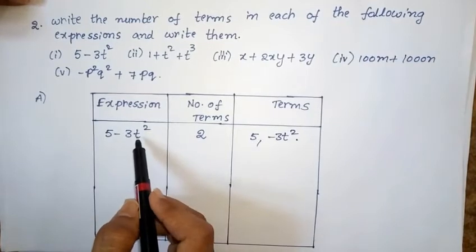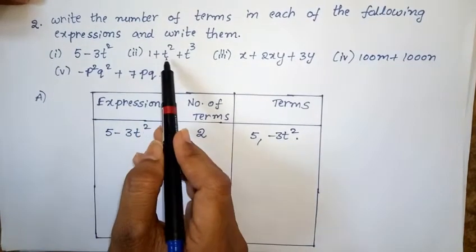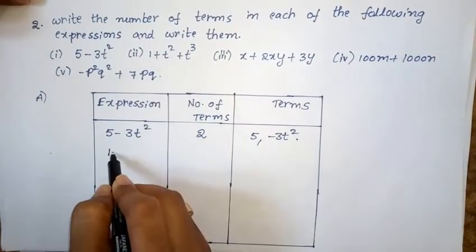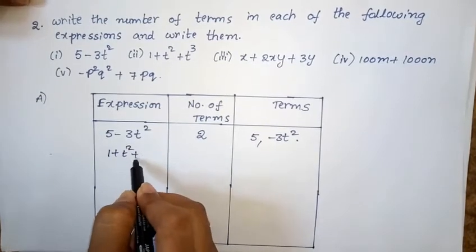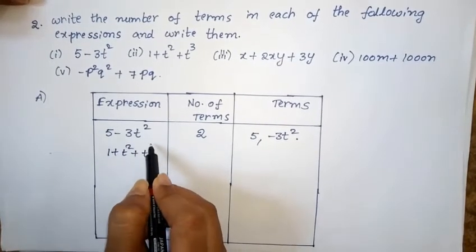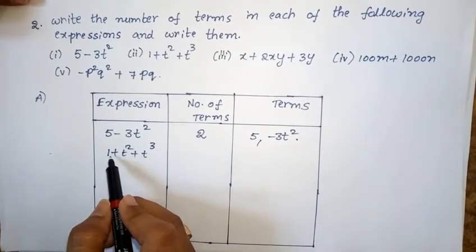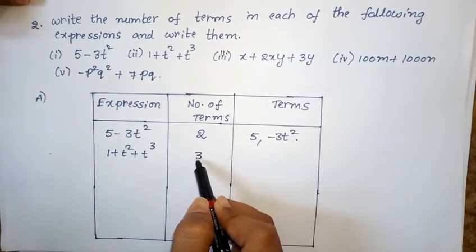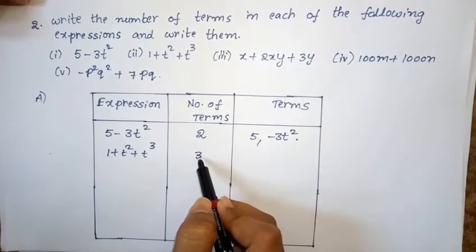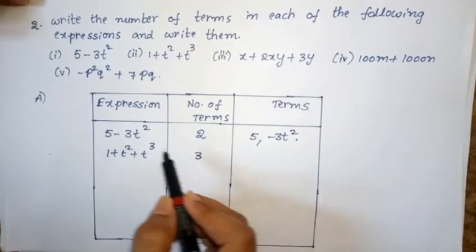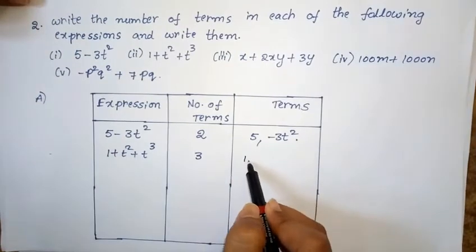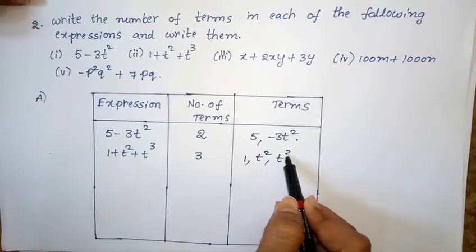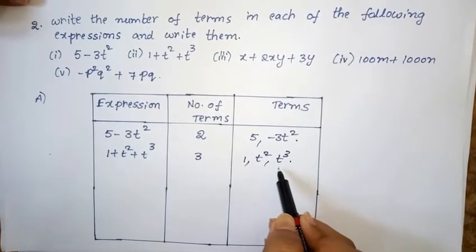Second expression: 1 plus t² plus t³. Total terms are 3. The terms are 1, t², and t³.